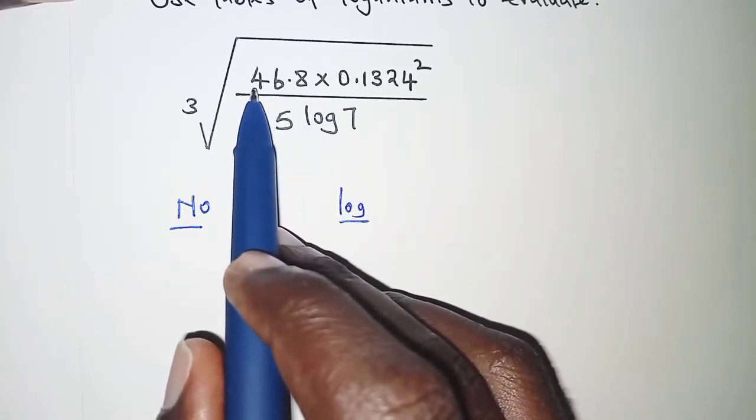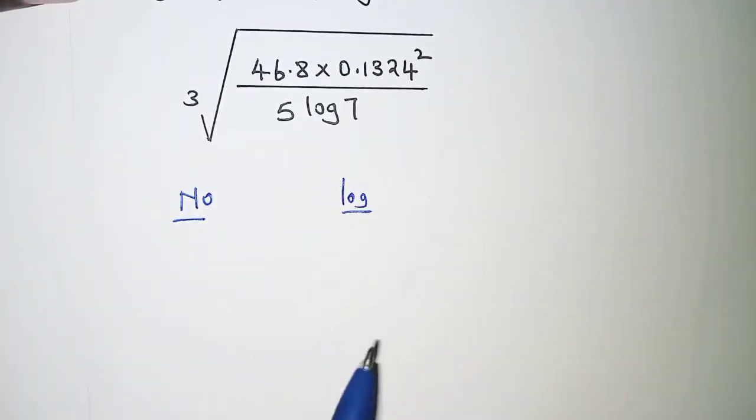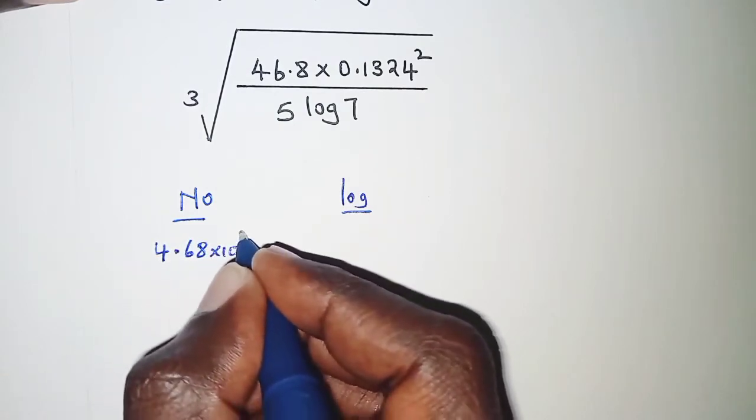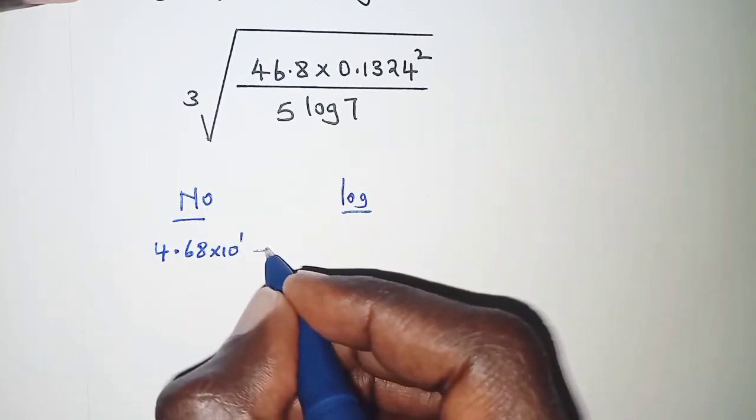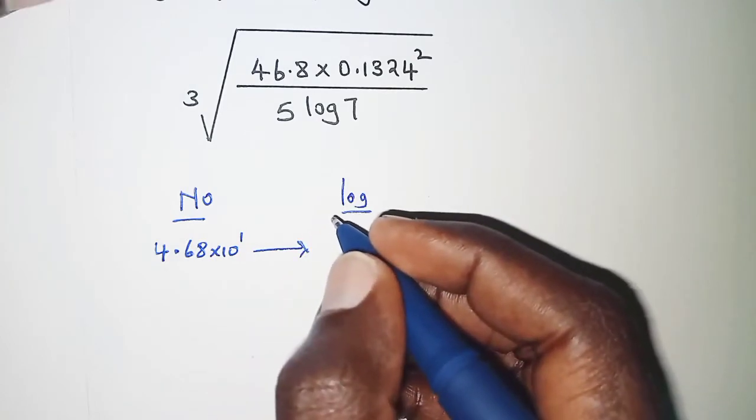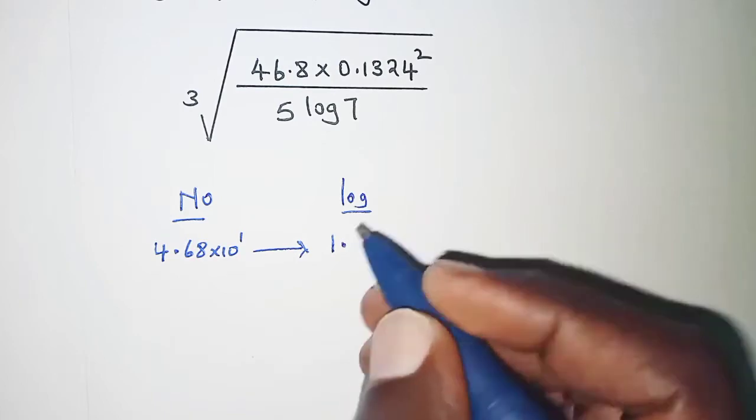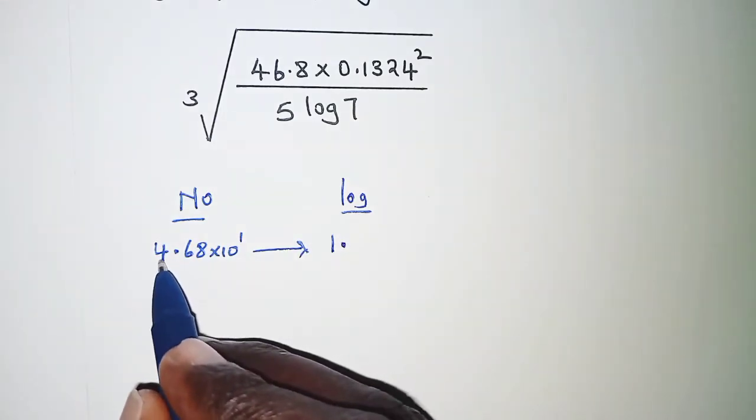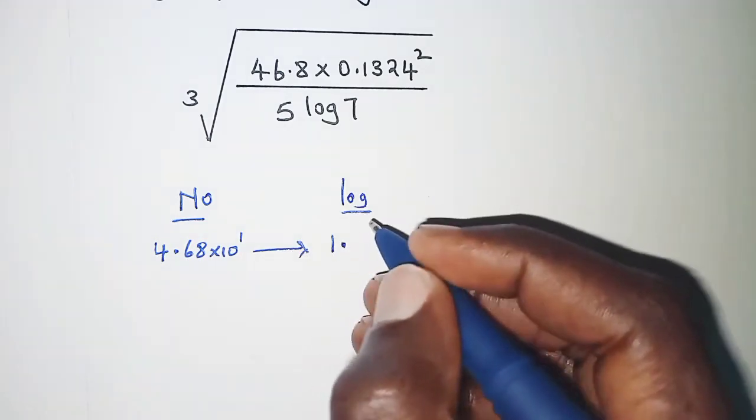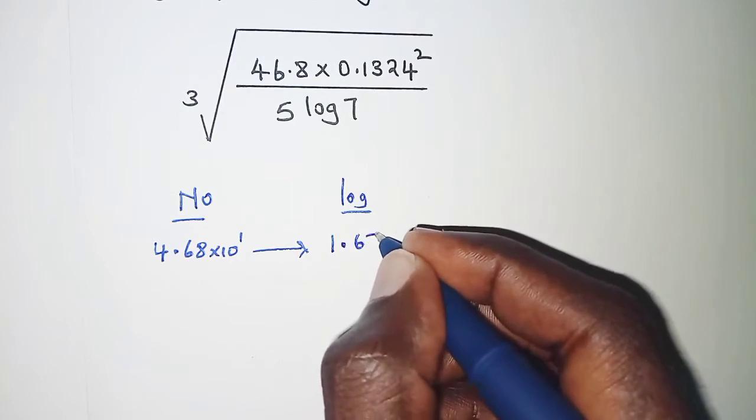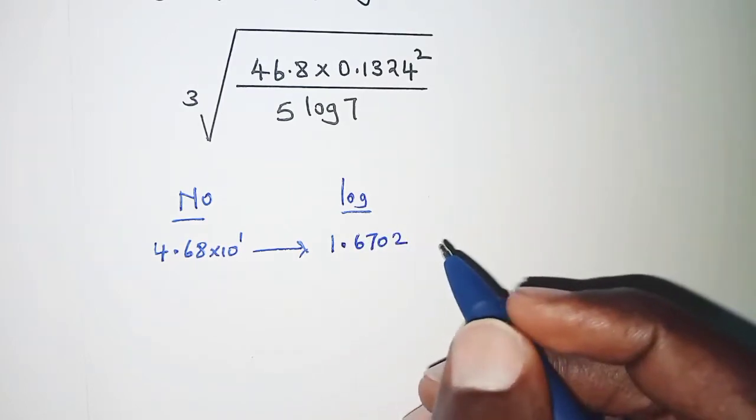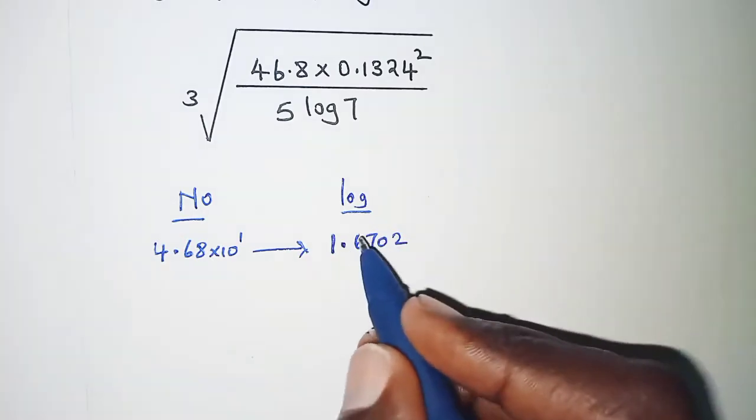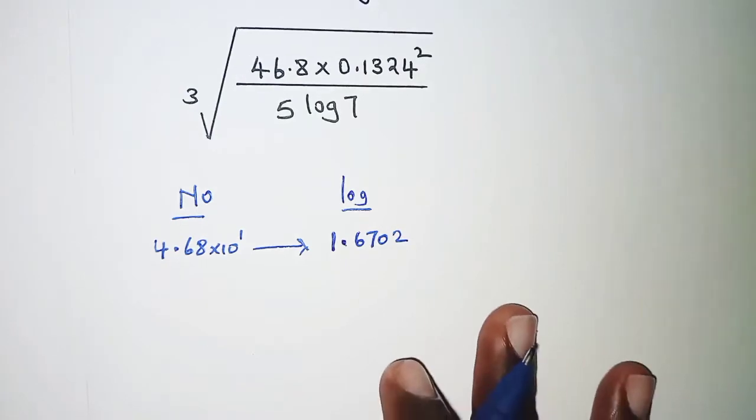Numerator will have 46.8. We write them in standard form. So 46.8 is 4.68 times 10 power 1. And then we read its logarithm, which is 1.6702. This 1 is the power of 10, and we read the logarithm of 4.68 from mathematical tables, giving us 6702. The part before the decimal point is called characteristic, and after the decimal point we have the mantissa.